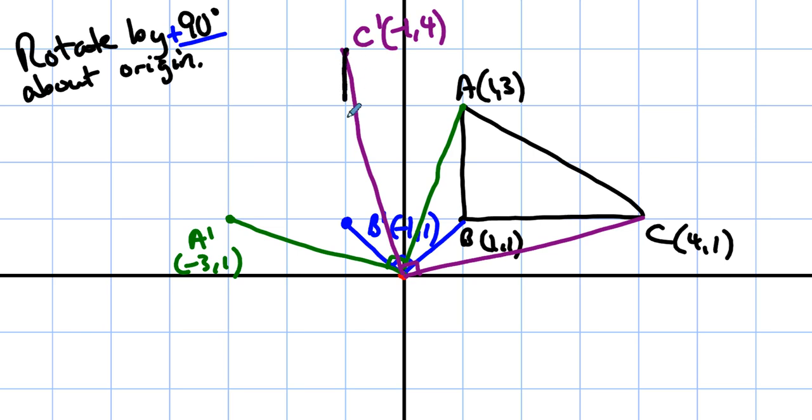4). And so we're going to get this triangle that looks like this, and it is the image of triangle ABC after a rotation by 90 degrees, counterclockwise, about the origin.